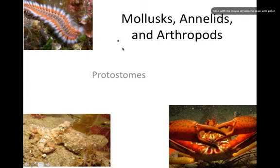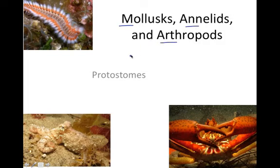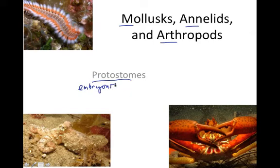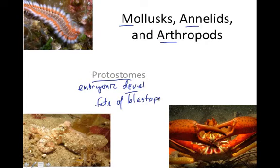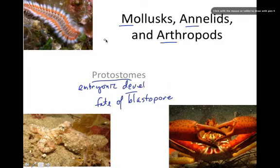We're going to continue to make our way through the evolutionary steps in terms of animals. The group we're going to look at this time is the protosomes. In terms of their embryonic development — which is a key evidence for how things are classified — we're looking at the fate of the blastopore, and that is going to distinguish the protosomes from the deuterostomes.